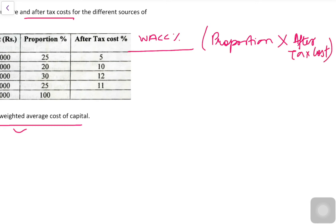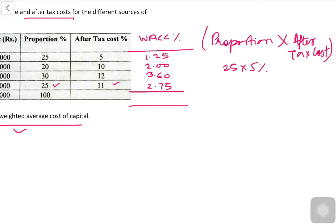So, 25 into 5% gives 1.25; 20 into 10% gives 2.00; 30 into 12% gives 3.60; and 25 into 11% gives 2.75. The total of this is 9.60%, and this is the weighted average cost of capital.